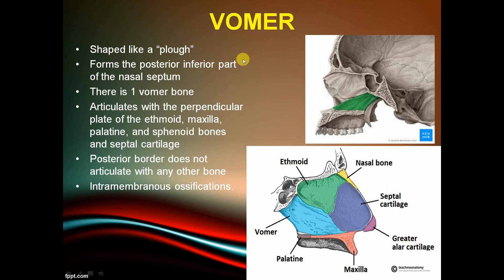The vomer is one bone that forms the posterior inferior part of the nasal septum. It articulates with the ethmoid bone, maxilla, palatine, sphenoid bone, and the septal cartilage. The posterior border does not articulate with any bone. Ossification is intramembranous.